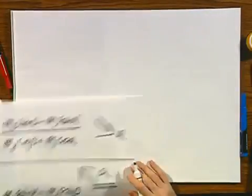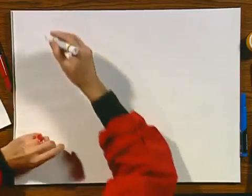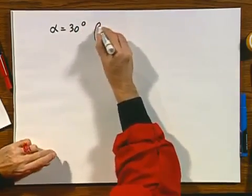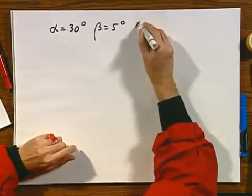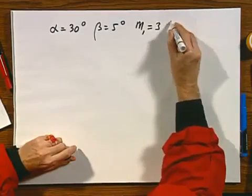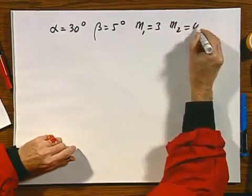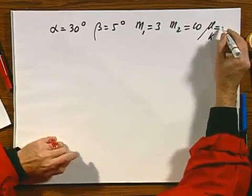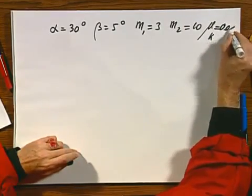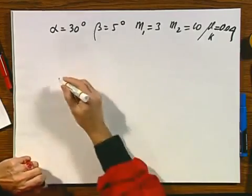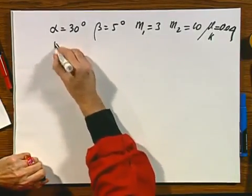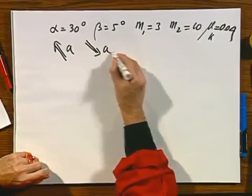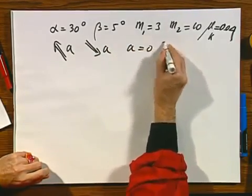I have chosen a particular example. I have chosen alpha equals 30 degrees, beta equals 5 degrees, m1 equals 3 kilograms, m2 equals 10 kilograms, and I have chosen for mu, which is really the kinetic friction coefficient, 0.04. Well, the question now is, is it being accelerated like this on the m2 side, or like this on the m2 side, or is a equals zero?